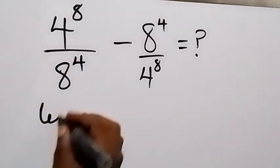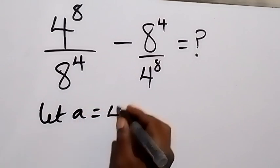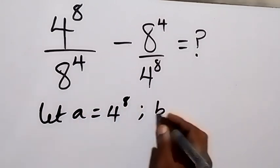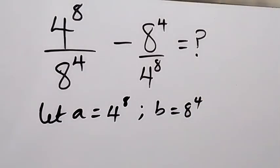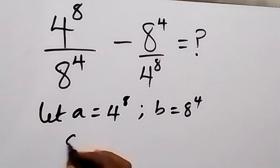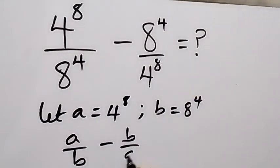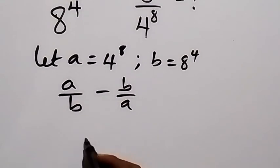Here, let a be equals to 4 raised to power 8, and b be equals to 8 raised to power 4. Then we can write this in terms of a and b, and this will be a over b minus b over a. From here we can bring this fraction together by finding LCM.